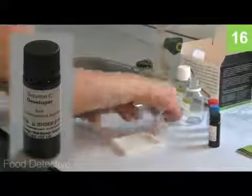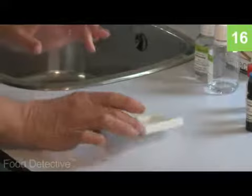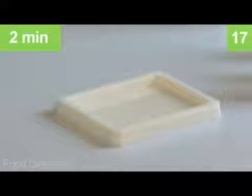Add solution C, the developer solution, to the reaction tray. Ensure that all the circles of the tray are covered. If air bubbles are present in any of the circles, tap the tray until they dislodge. Leave for exactly two minutes. Blue dots will appear where reactive foods are present.